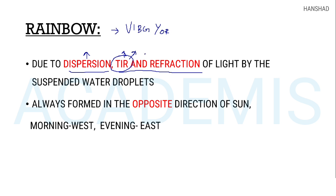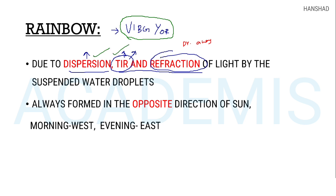We will discuss all the details in our class. One phenomenon is refraction. The third phenomenon is light by suspended water droplets. What is dispersion or TIR? The first thing is called rainbow. When you look at a rainbow, it will be in the opposite direction of the sun.